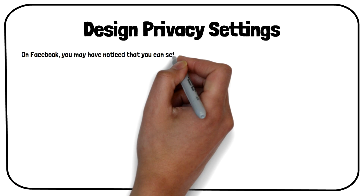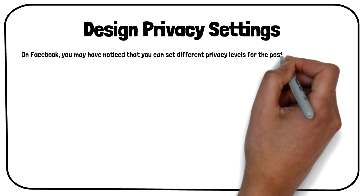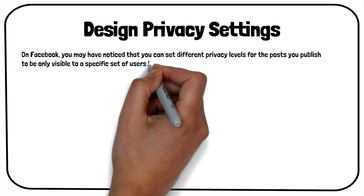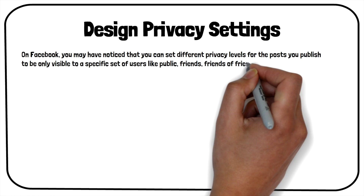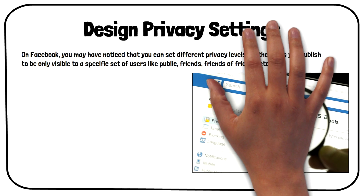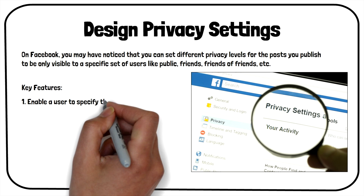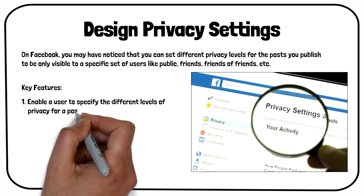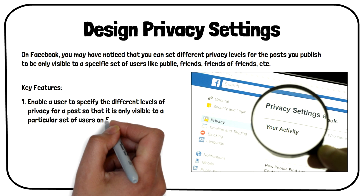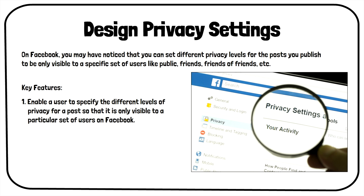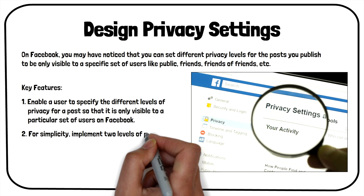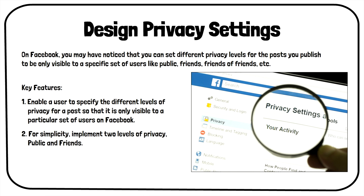On Facebook, you may have noticed that you can set different privacy levels for the posts you publish, to be only visible to a specific set of users like public, friends, friends of friends, etc. The privacy implementation design can be fairly complex, so we will limit it to a few core features that can be covered in a 45-minute interview round.